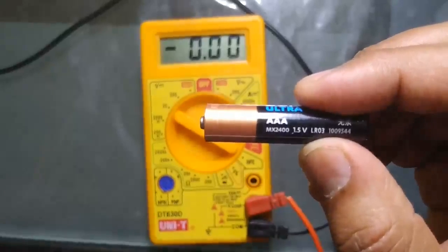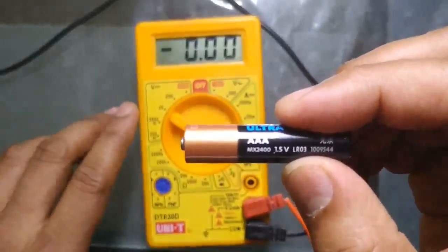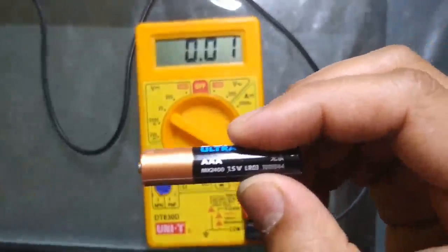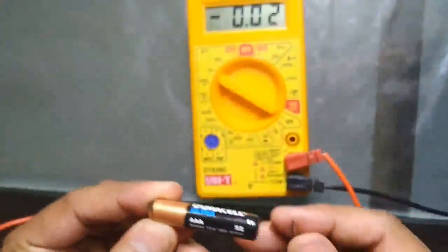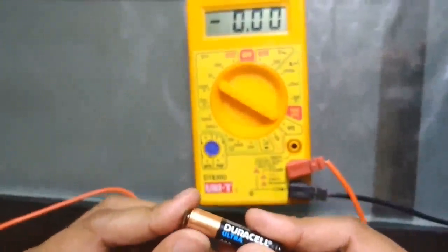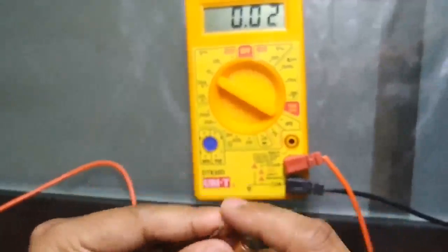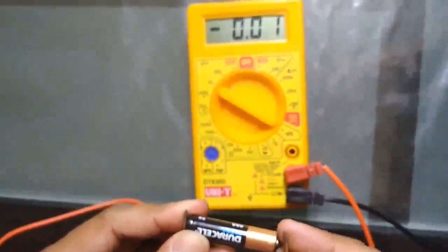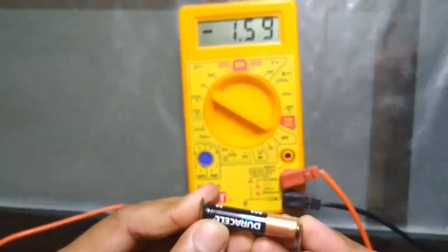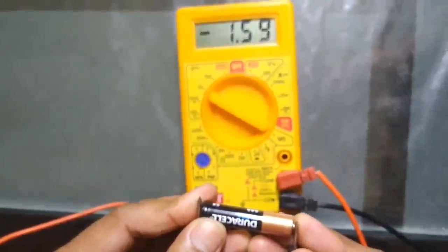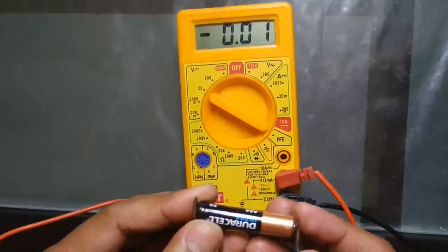1.5 volts is the range, the maximum range of this battery. Using the multimeter, we connect the probes, and I got minus 1.59. This means the battery is connected negative.